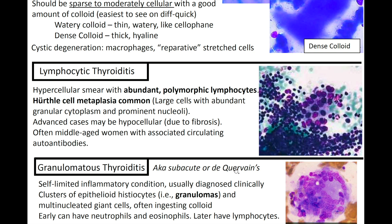Next up, we've got granulomatous thyroiditis, also known as subacute or de Quervain's thyroiditis. As the image would suggest, in this entity you can see clusters of epithelioid histiocytes, or granulomas, and multinucleated giant cells often ingesting colloid. This is a self-limited inflammatory condition, usually diagnosed clinically, and it is often painful. Early on you can have neutrophils and eosinophils, and later on you can have lymphocytes.